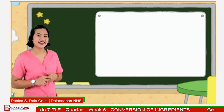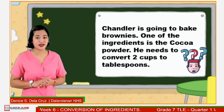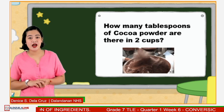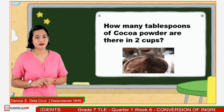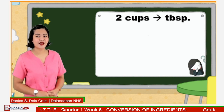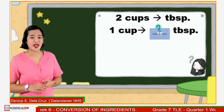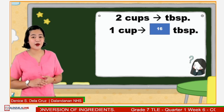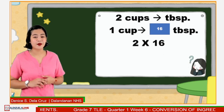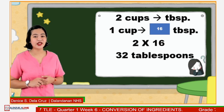Let us try to answer this. Chandler is going to bake brownies, and one of the ingredients is cocoa powder. He needs to convert 2 cups to tablespoons. How many tablespoons of cocoa powder are there in 2 cups? According to our conversion table, 1 cup is equivalent to 16 tablespoons, so we multiply 2 by 16. Fantastic! The answer is 32 tablespoons.